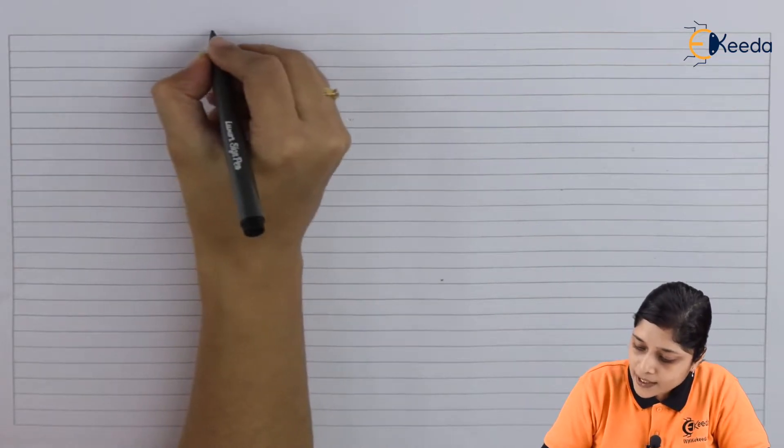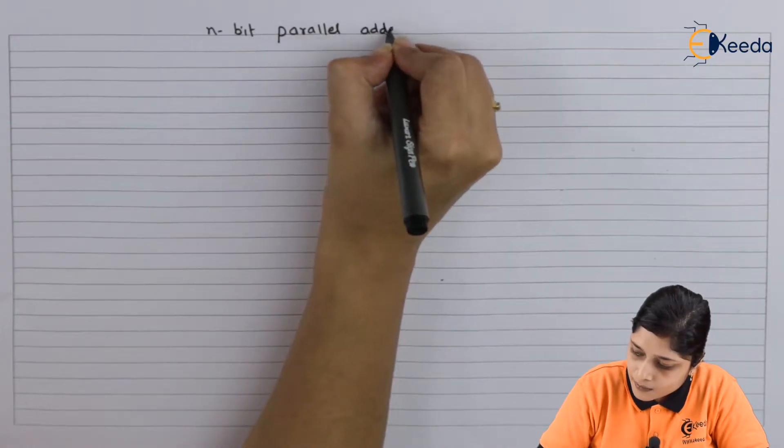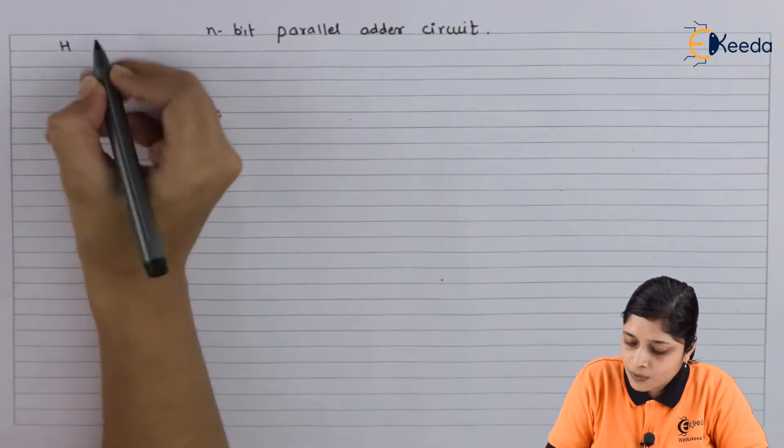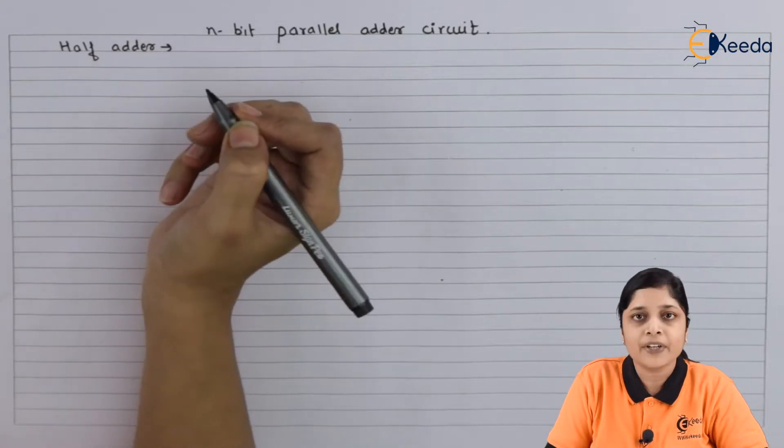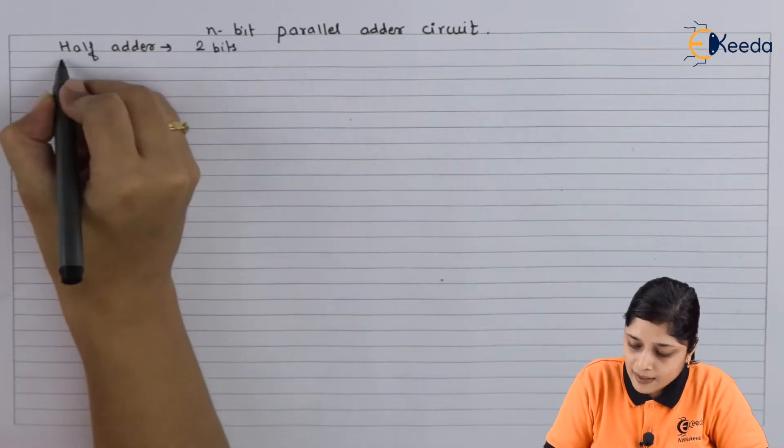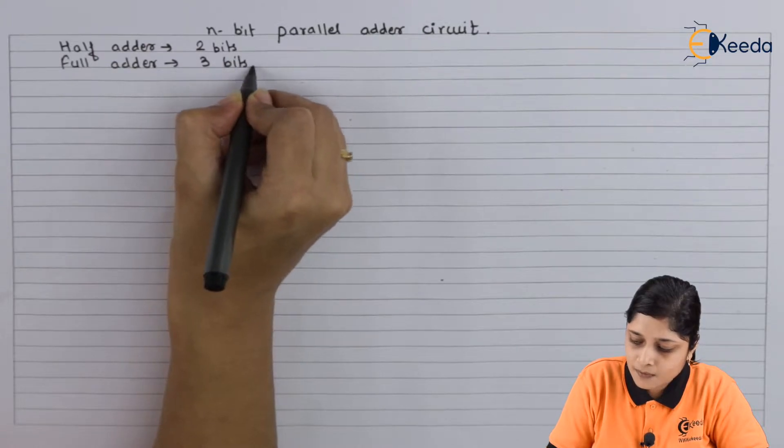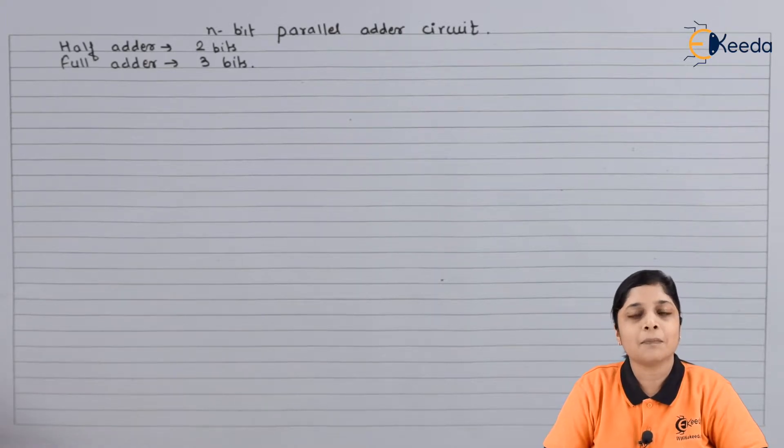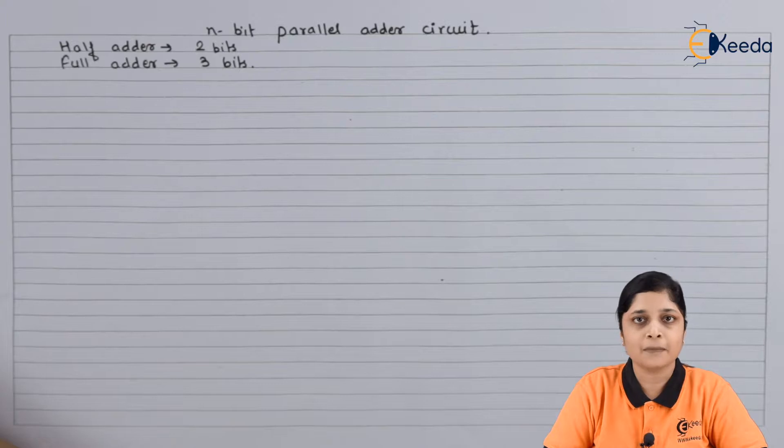So your heading is n-bit parallel adder circuit. Now we are focusing on half adder. Half adder is used to add two bits and full adder is used to add three bits. Now if the application is of more than three bit addition, then n-bit parallel adder circuits are used. How to design the circuit for calculation of n-bit parallel adder we will see here.